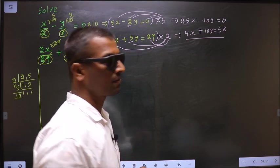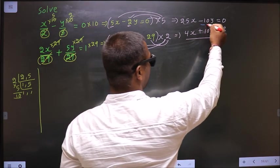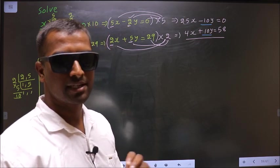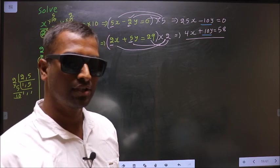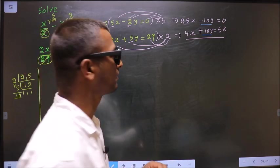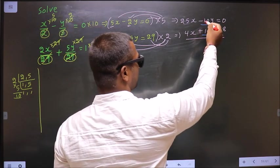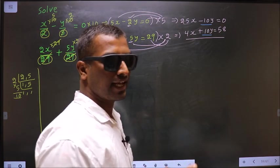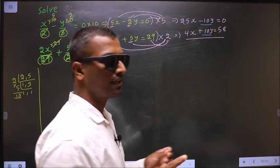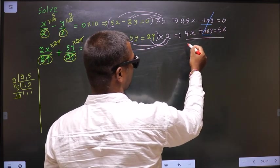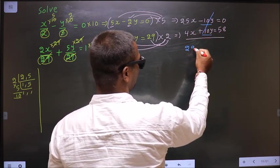Now I have made y-coefficient same, only to cancel them out. So now you decide by adding do they cancel out or by subtracting. Here it is minus 10, here it is plus 10. So if I add, they cancel out. So let us add. So when I add, this will cancel out. Here 25x plus 4x will be 29x.